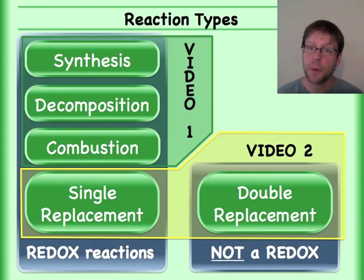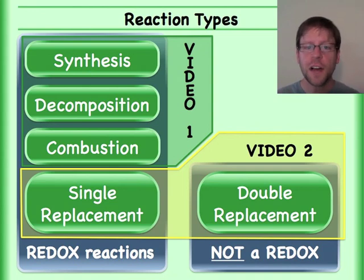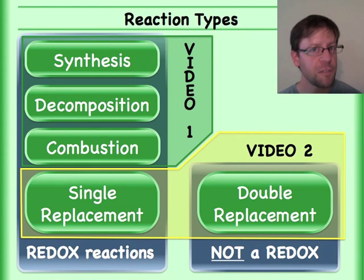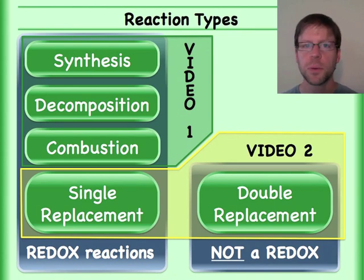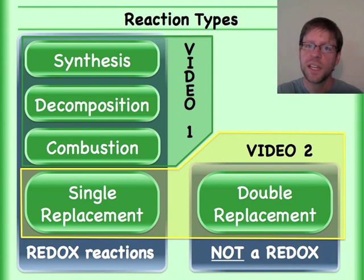All right, that was it for this video as well. We covered all five of the different reactions — remember four of the five were redox reactions where we have the electron transferred, and then our double replacement where there was no electron transfer. Hopefully this was all pretty straightforward, and if it made sense, let your computer know.